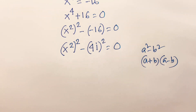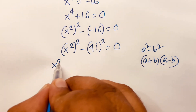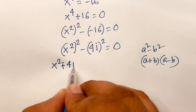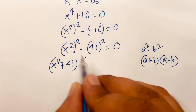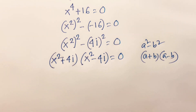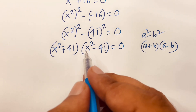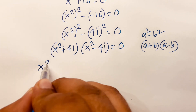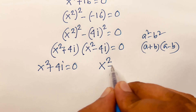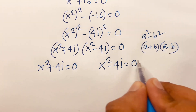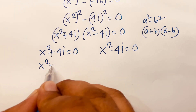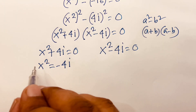Using the identity a² - b² = (a + b)(a - b), I can factor this as (x² + 4i)(x² - 4i) = 0. This gives two cases: Case 1: x² + 4i = 0, and Case 2: x² - 4i = 0.